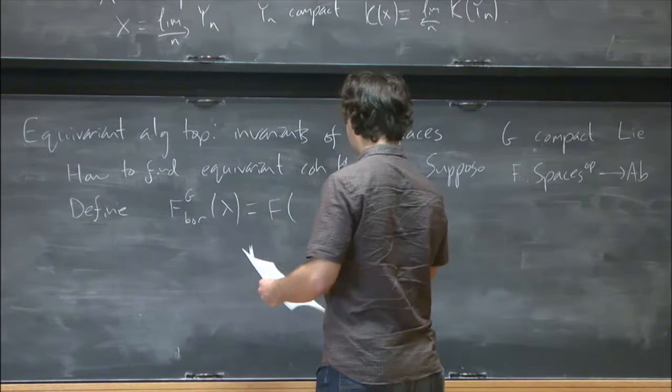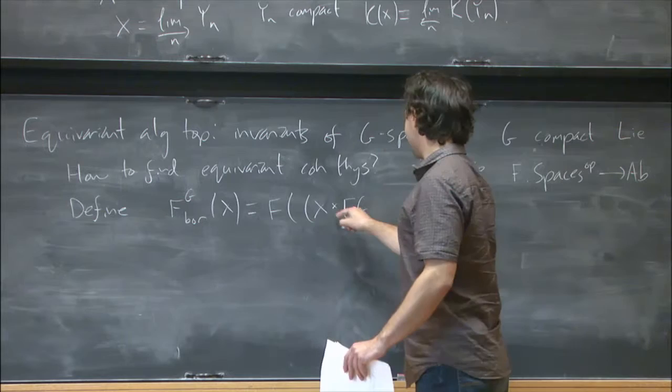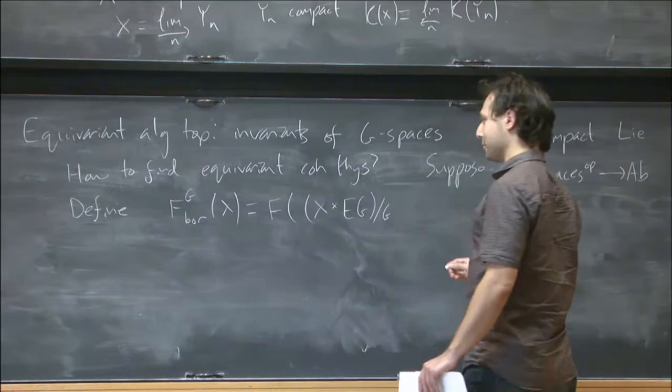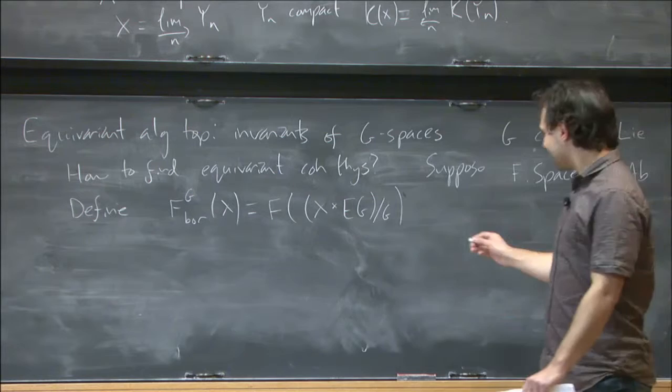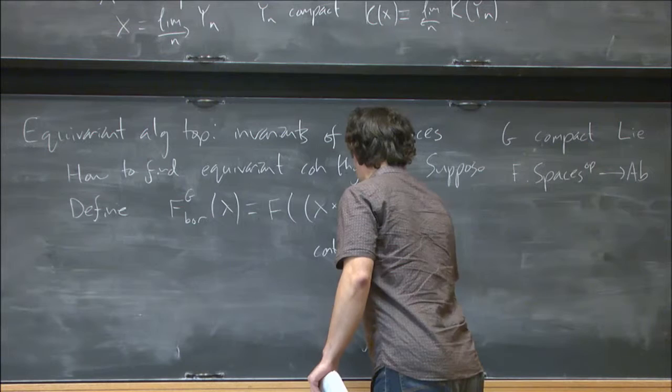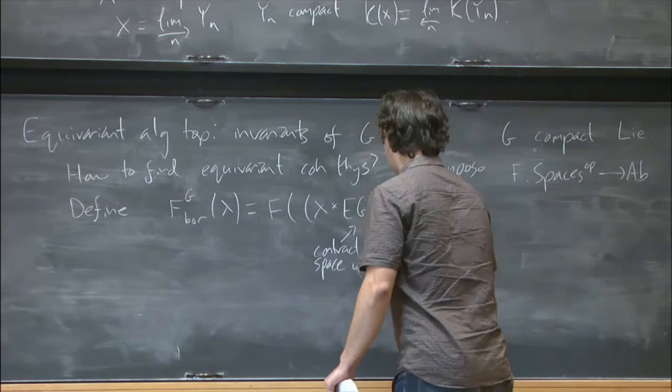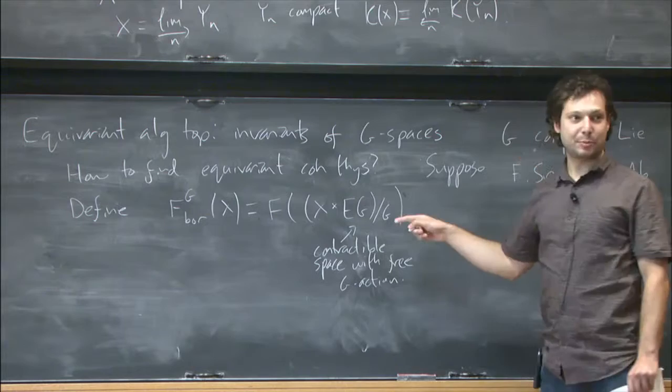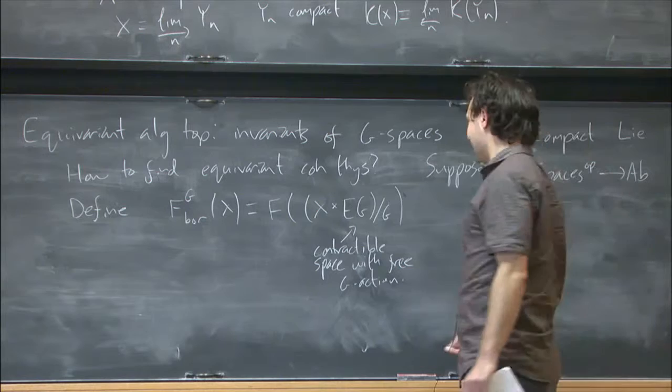well, I'm going to just produce an ordinary space out of the G-space X and evaluate F on that. And that ordinary space is going to be, I'll take the product of X with this G-space EG, I'll explain that in a moment if anyone hasn't seen it, and take the quotient by G and just evaluate F on that space. And EG here is a contractible space with free G-action.